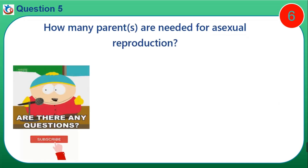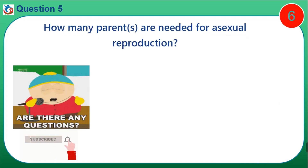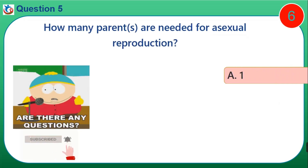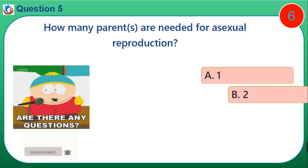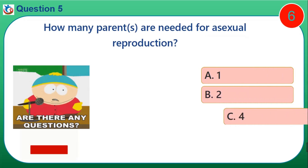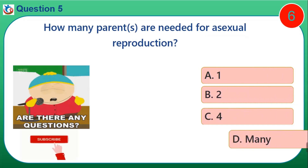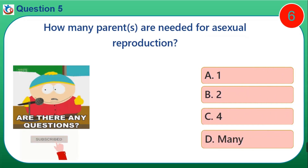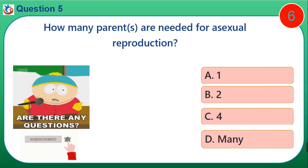Question 5. How many parents are needed for asexual reproduction? A. One. B. Two. C. Four. D. Many.